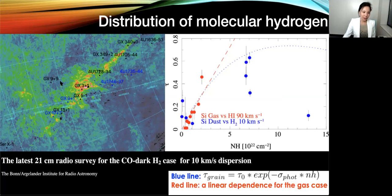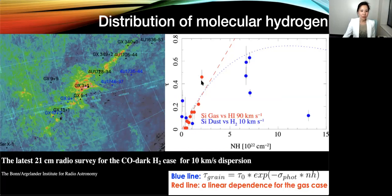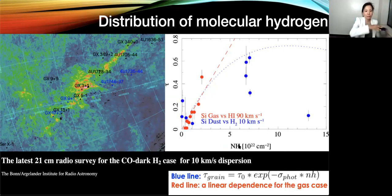On the left, the background is a radio survey showing the location of each source in our current silicon survey. On the right, we plot the optical depths as a function of the molecular hydrogen in radio. The red is silicon gas optical depths and the blue are the dust optical depths, with the x-axis being molecular hydrogen in radio. We can say the gas optical depths show they are linearly dependent on molecular hydrogen, but for the dust, it shows self-shielding, which is expressed in this formula.